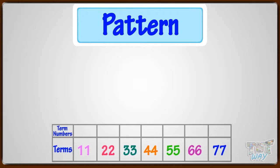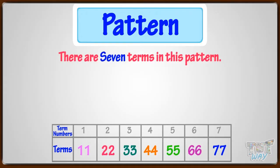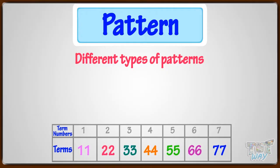Let's give term numbers to the terms. We have given term numbers from 1 to 7 to each term. That is, there are 7 terms in this pattern where the term number of 11 is 1, and the term number of 33 is 3, and so on. Now let's learn different types of patterns.